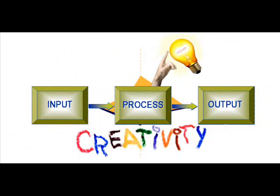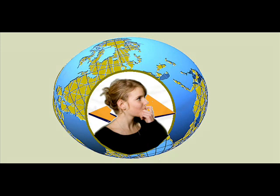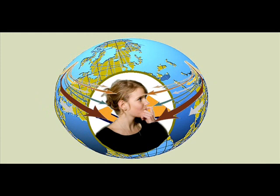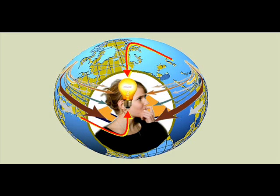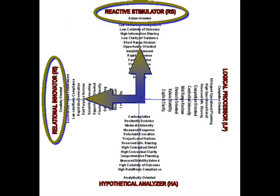IOP technology gives us a lens with which to look at this kind of creativity. We can begin with the input element of the IOP model. Everything starts with an issue of concern — there has to be some focal point, something you want to change. In the IOP model, the volume of raw ideas is primarily controlled by styles.